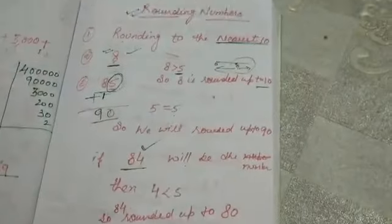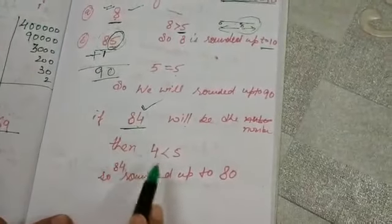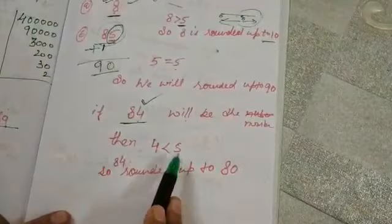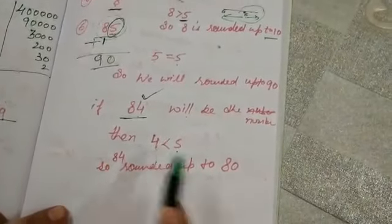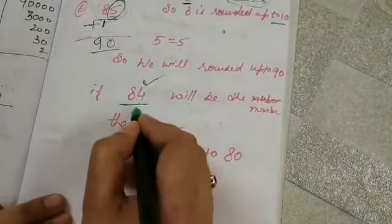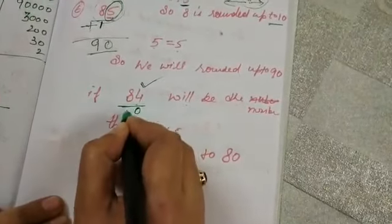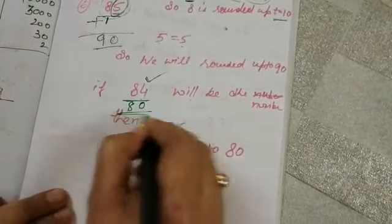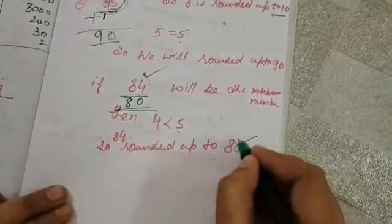The same way we will see the example 84. In 84, the one's place is 4. So 4 is less than 5. If 4 is less than 5, what do we do? We will put 0 here and write only 8 here. That means we will write 80.